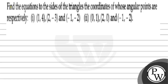Hello, let us read the question. Find the equations to the sides of the triangles, the coordinates of whose angular points are respectively. Question 1: (1, 4), (2, -3), and (-1, -2). And question 2 is: (0, 1), (2, 0), and (-1, -2).